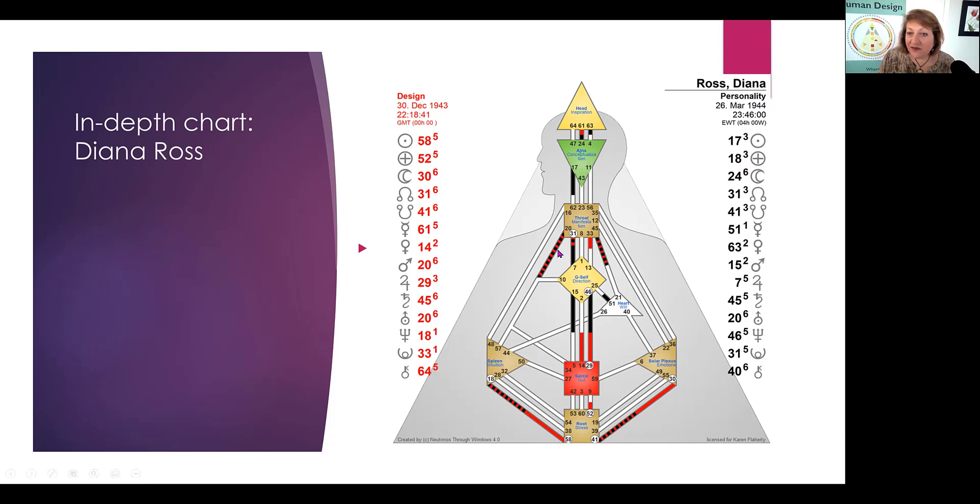She does have the 3-17, which is very powerful. It's actually the channel of the Alpha. And she has the Gate of the Queen, and she has the Gate of, we call it metamorphosis. It's basically knowing how to speak in the moment. A lot of manifesting generators do have this, and she has it both conscious and unconscious, consciously. So but this channel of the Alpha is a combination of influence when she speaks, which she definitely had, and leadership, right? So she was the leader and was requested, asked to be the leader. She didn't say, I'll be the leader. She was asked to become the leader of the Supremes after the other woman left.